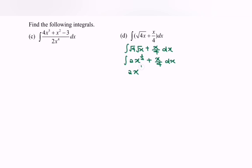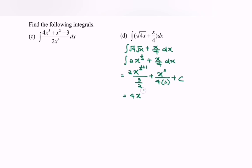Integrate x to the power of 1 over 2, plus 1 over 3 over 2, plus x squared over 4, multiplied with 2, plus c. Rewrite the situation and we will have 4 multiplied with x to the power of 3 over 2, over 3, plus x squared over 8, plus c.